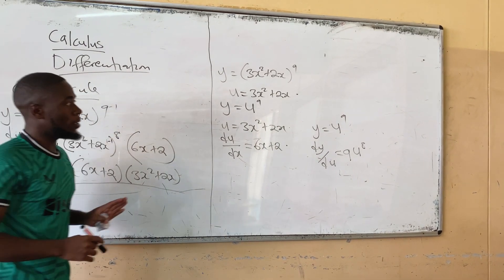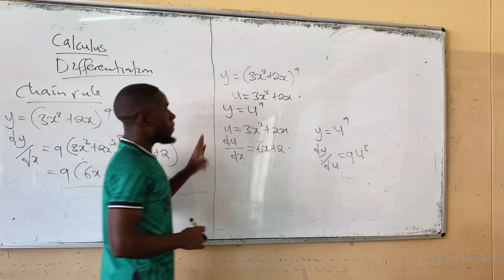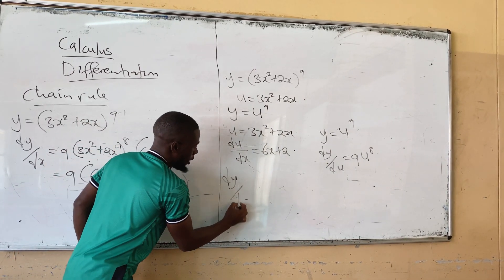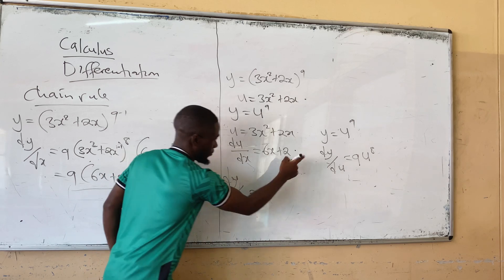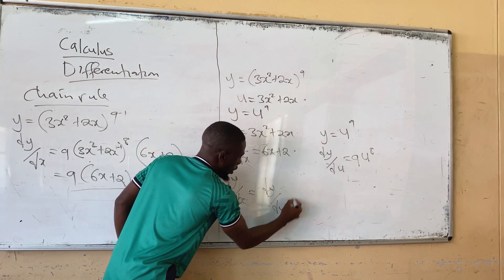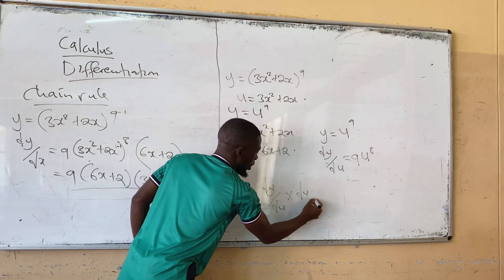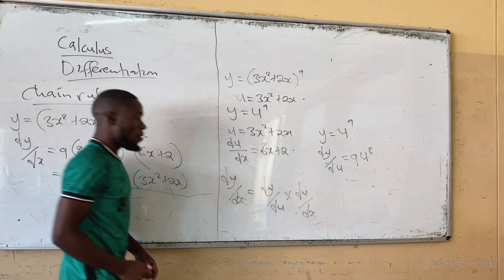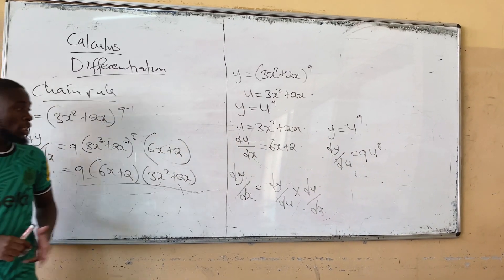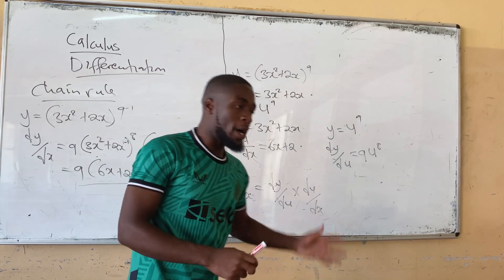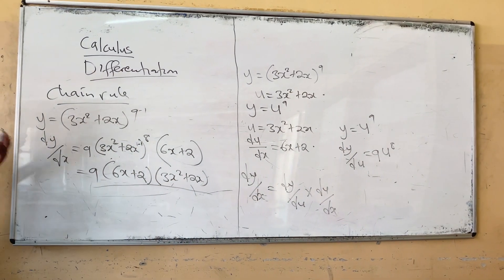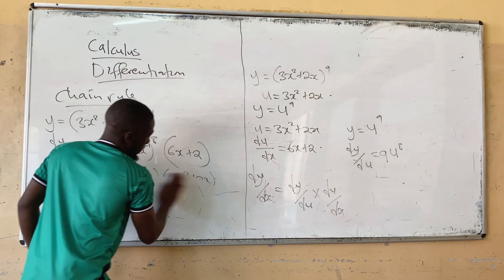The formula for the chain rule is: dy/dx equals dy/du multiplied by du/dx. This is the chain rule formula.